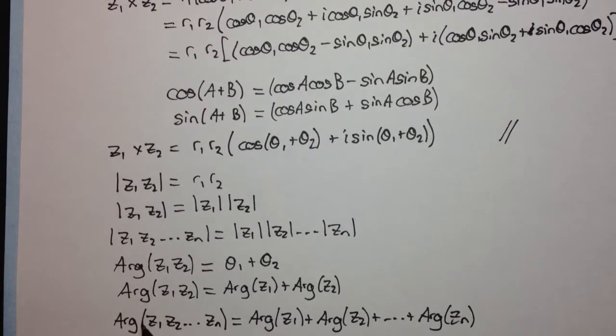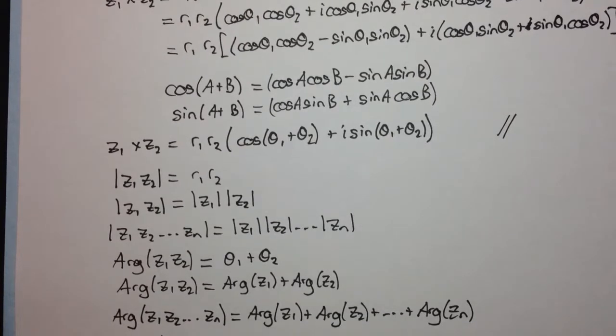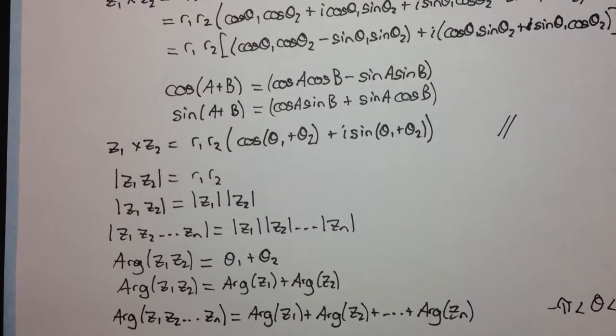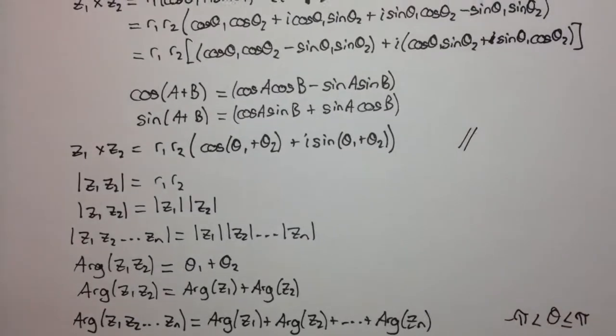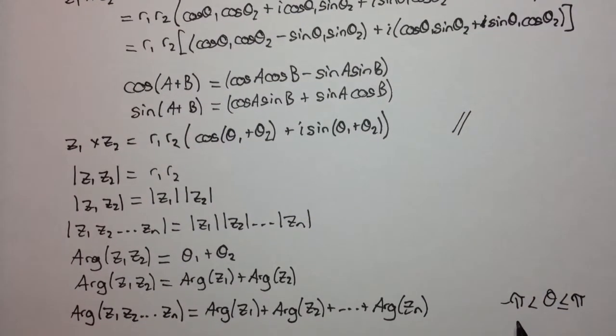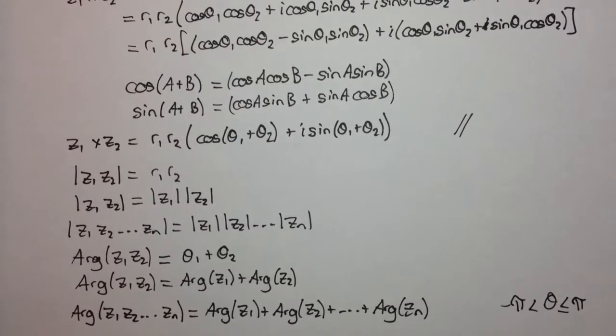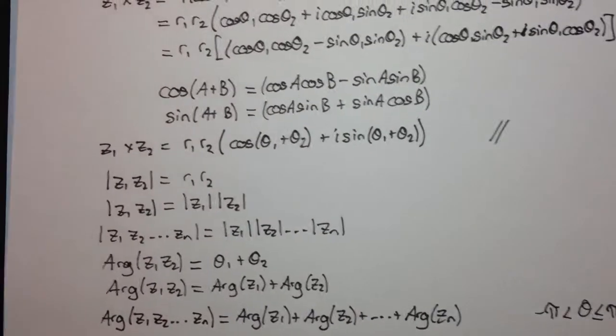Now, it's important to note that this argument, when we add up all these separate arguments, it might not lie within our principal argument range. But that's fine, because we can add 2π or subtract 2π to it in order to get it back to our principal range of, remember, principal range was minus π is less than theta is less than or equal to π. Right? So we can add or subtract multiples of 2π to get it back into this form.